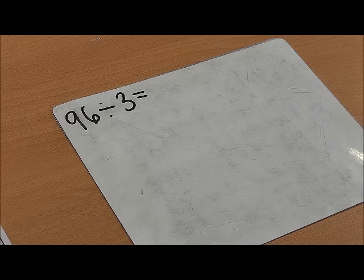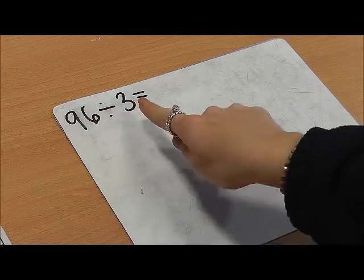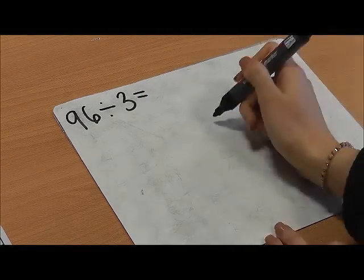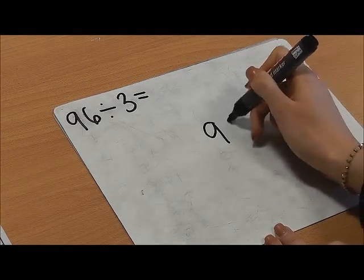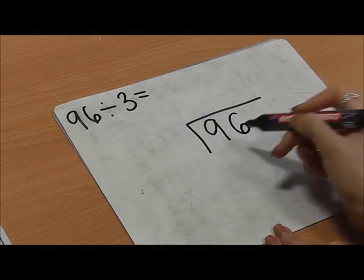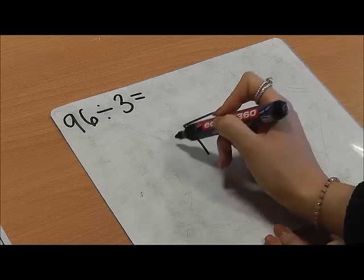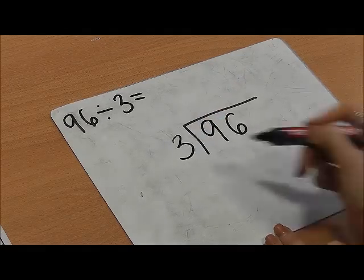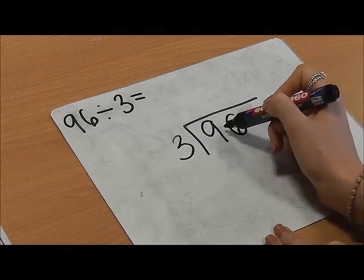My calculation is 96 divided by 3. When we do short division, our divide sign looks like this. So we're asking 96 divided by 3, or how many 3's go into 9?